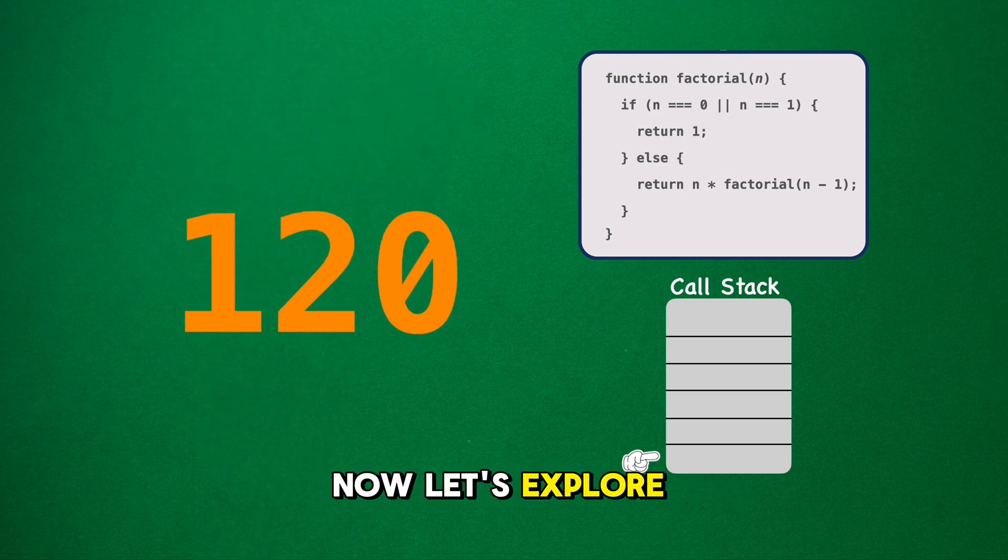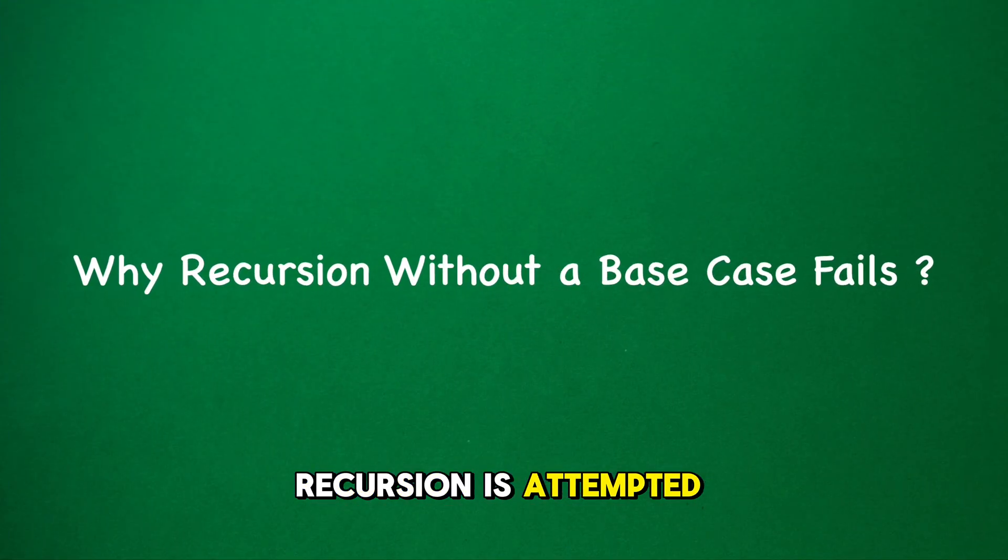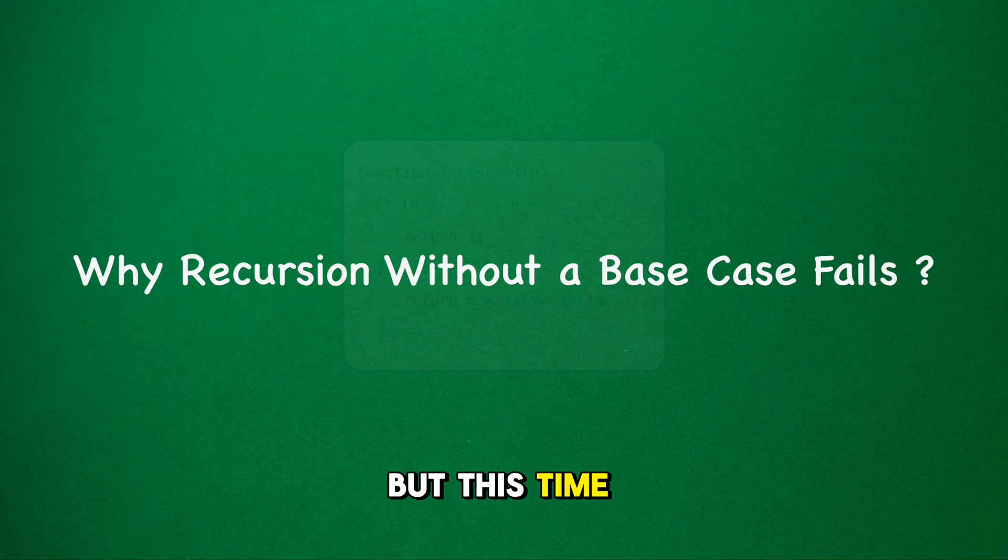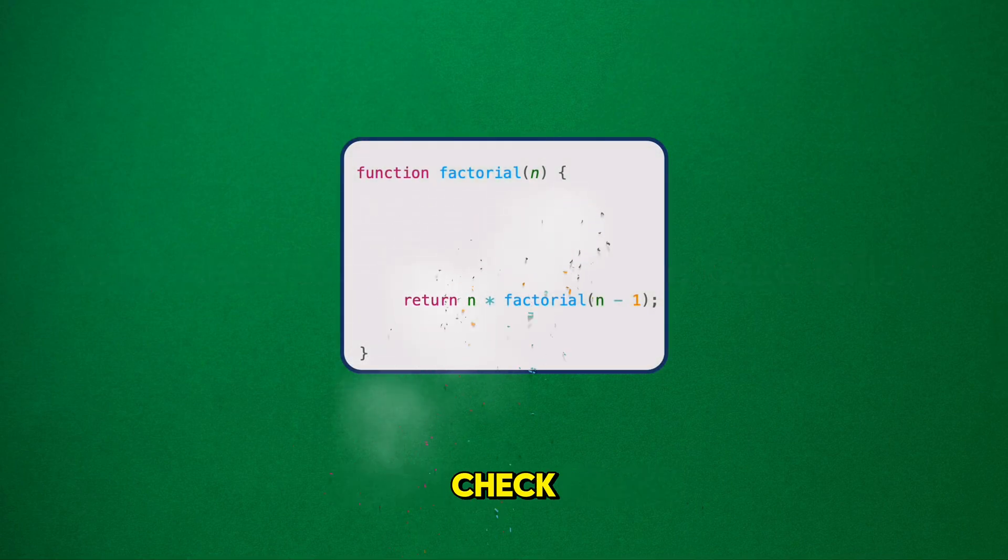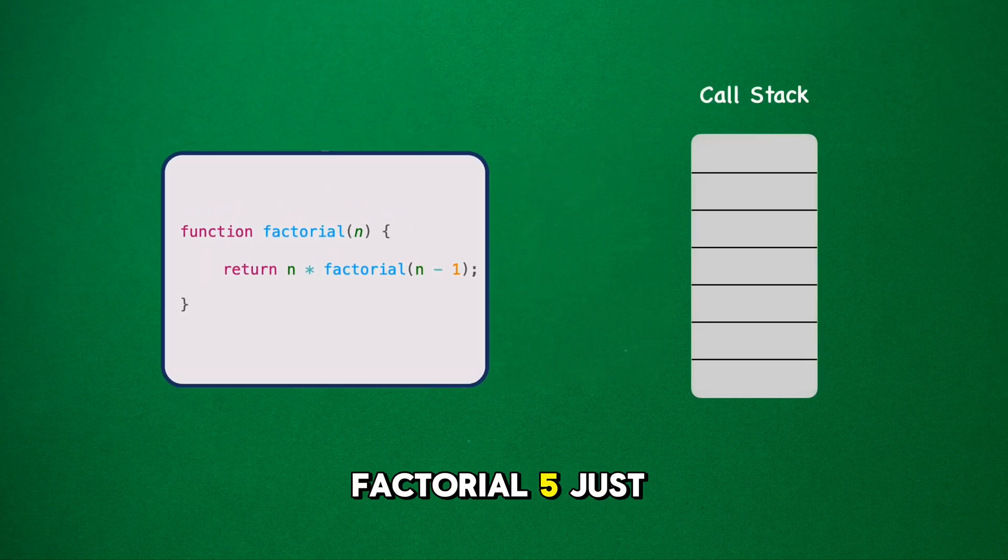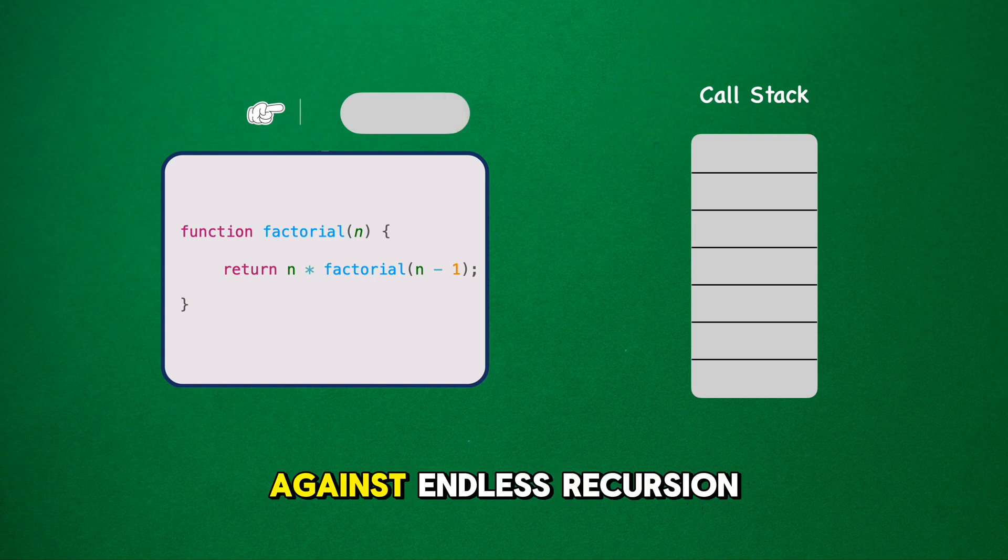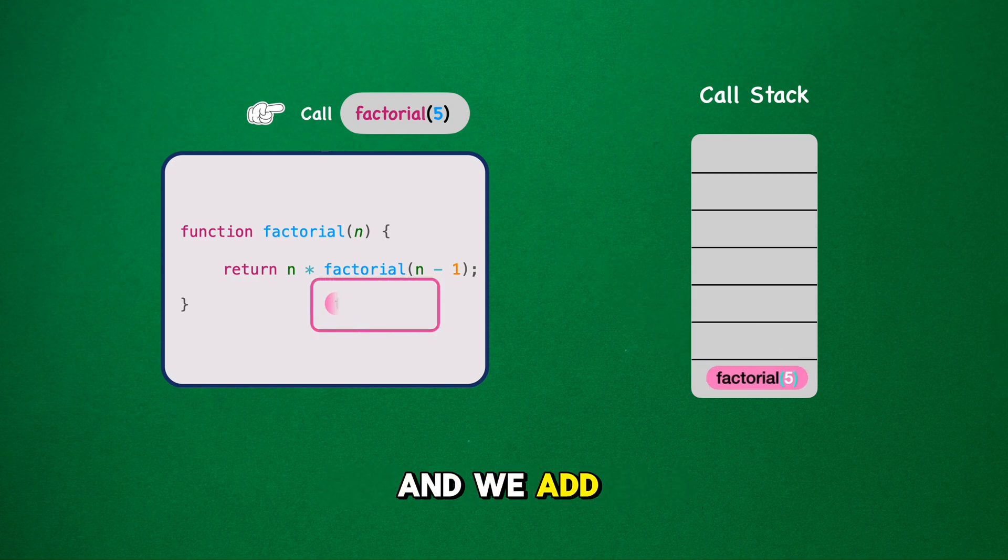Now, let's explore what happens when recursion is attempted without a base case. To illustrate why this is problematic, we'll use our factorial function, but this time, we'll omit the crucial base case check. Imagine we call factorial 5, just as before, but our function is now missing the safeguard against endless recursion. The function calls 5 asterisk factorial 4, and we add factorial 4 to our stack.